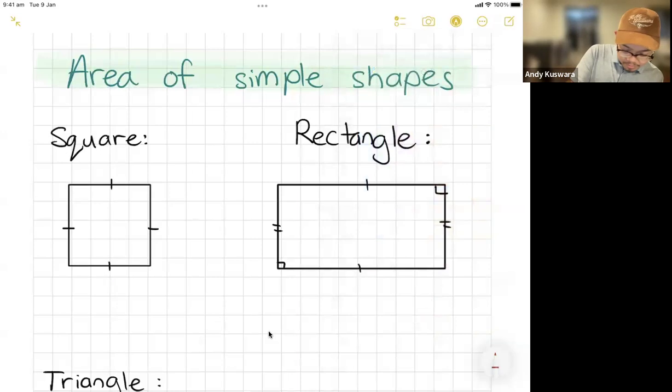Square is just side times side. Rectangle is, I like to say, base times height.